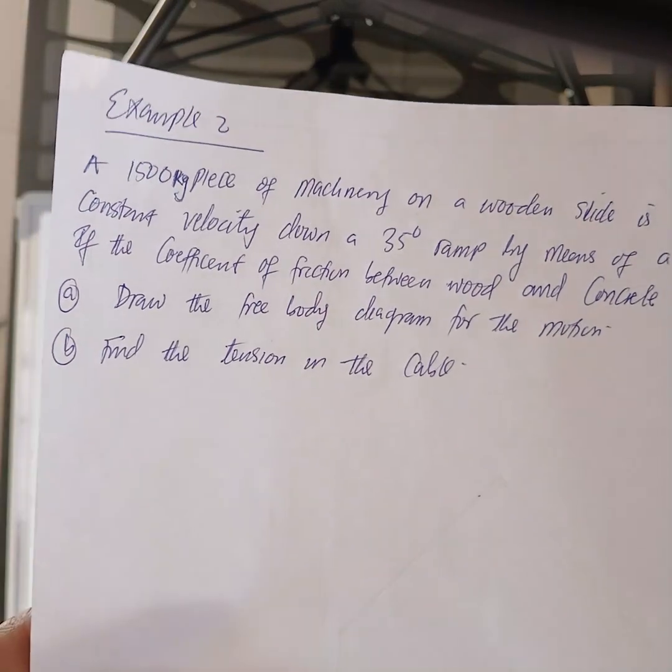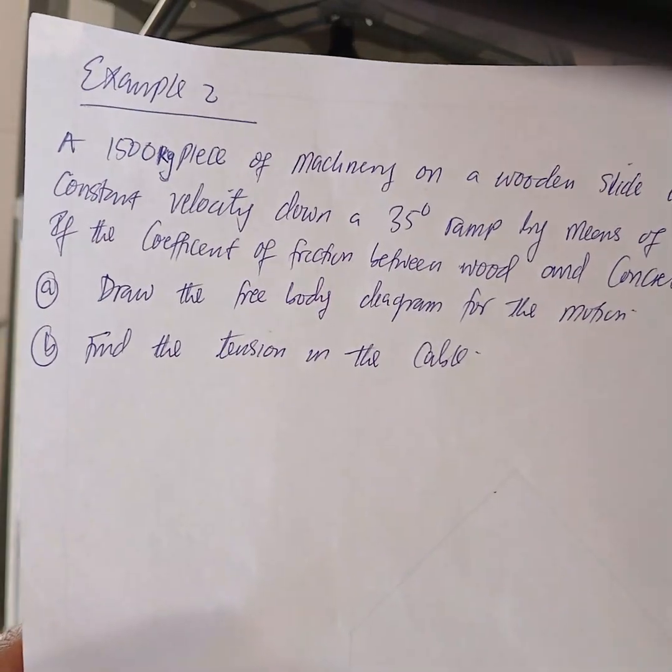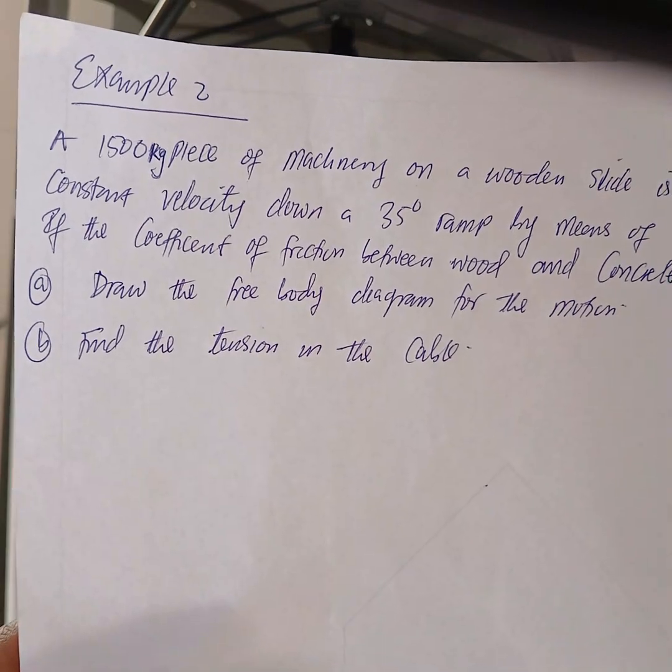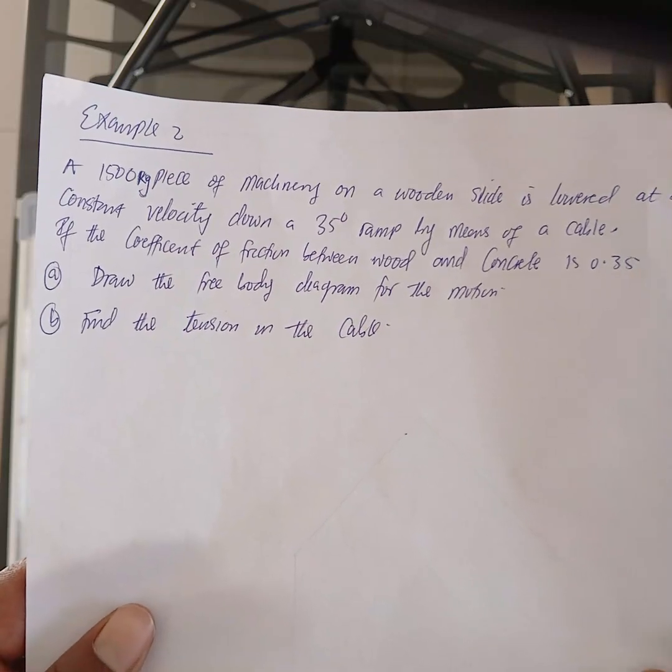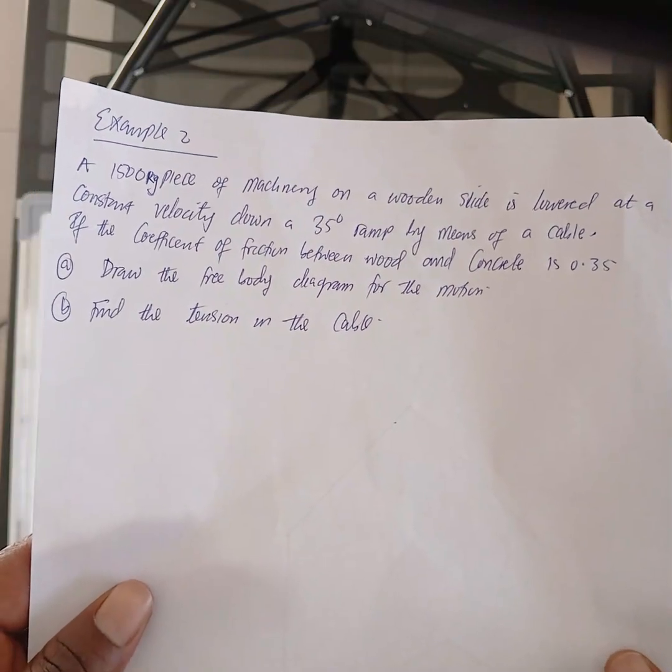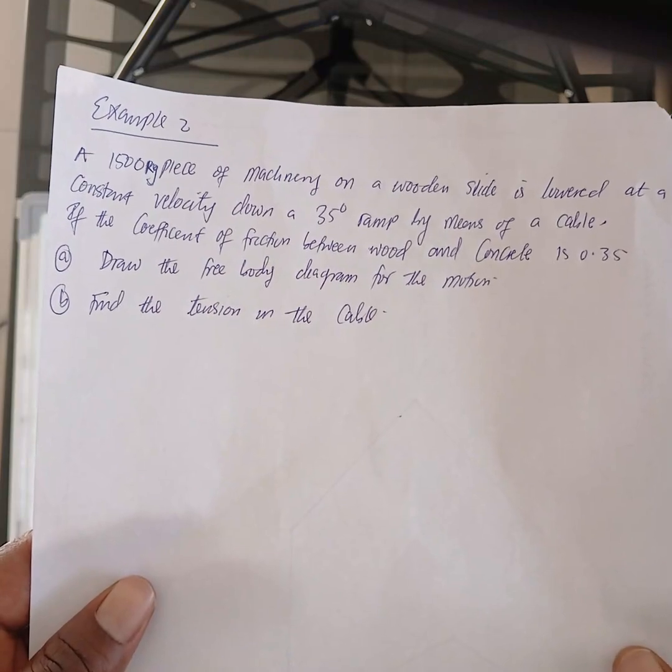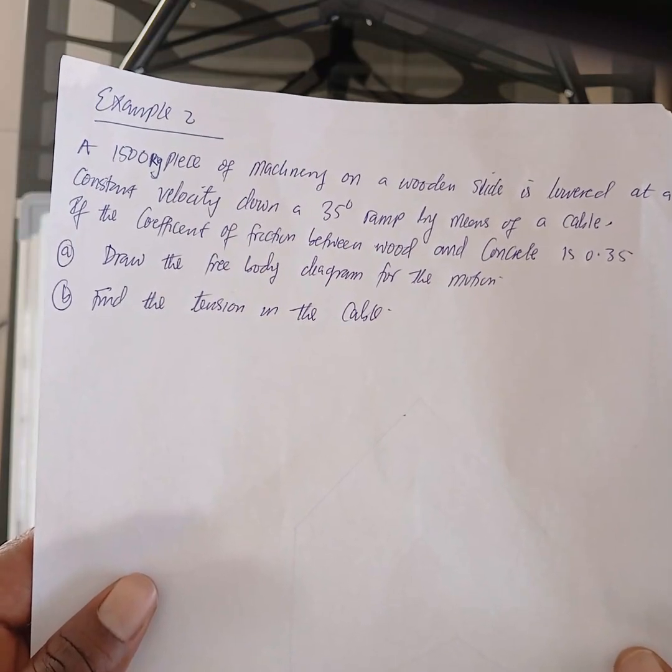Example number two. A 1500 kg piece of machinery on a wooden slide is lowered at a constant velocity down a 35 degree ramp by means of a cable.